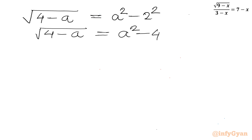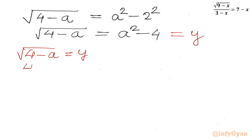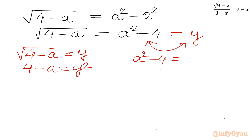Now I'll put this equation equal to y. From the first and third expressions, square root of (4 minus a) equals y, so 4 minus a equals y squared. From the second, a squared minus 4 equals y, so a squared equals 4 plus y.